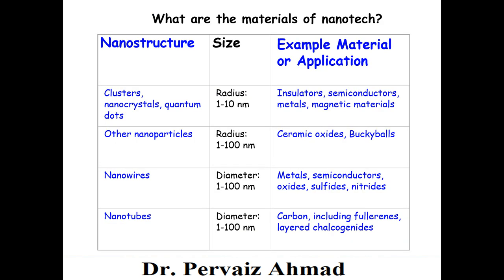The next most popular question is: what are the materials of nanotechnology? What are the materials that we study inside nanotechnology? Basically, those materials which exist in or are studied in nanotechnology, we call them nanostructures. What are those nanostructures, what are their size ranges, and what are examples of those materials?